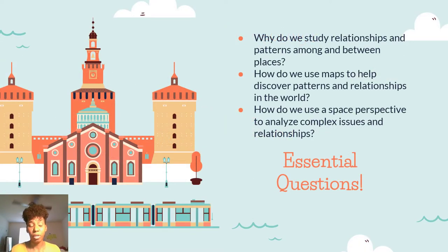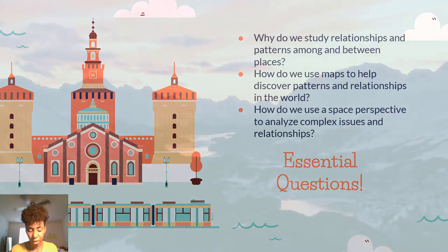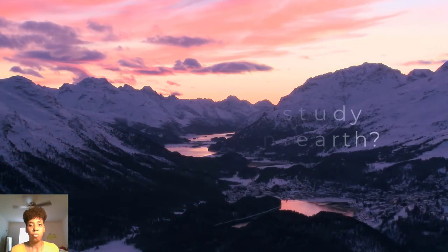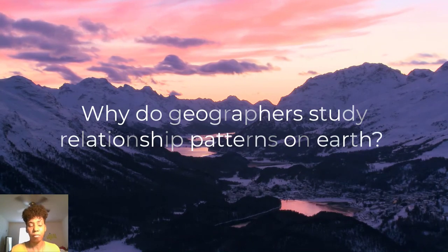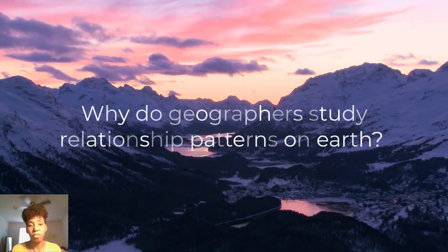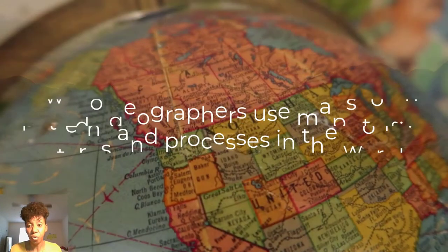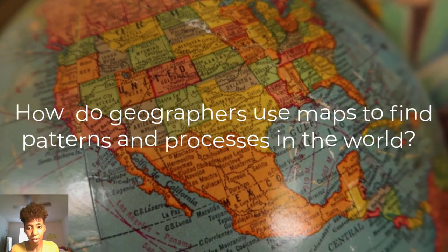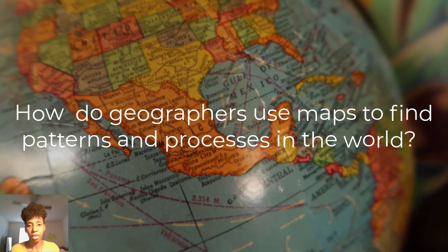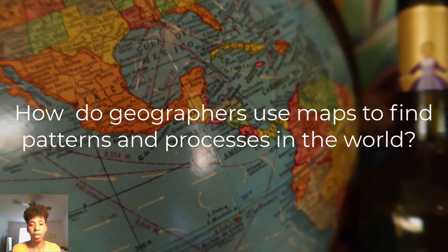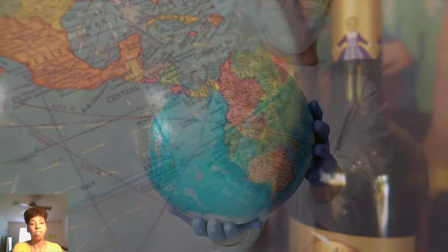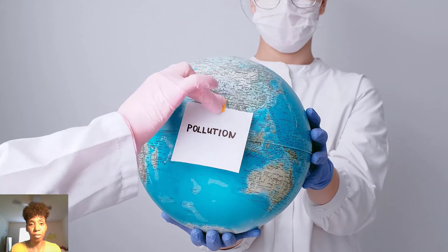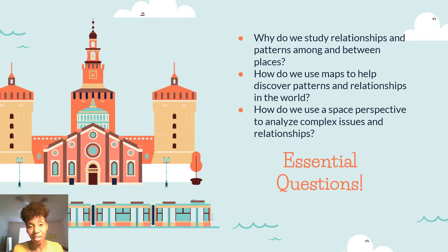The essential questions are always questions that we ask ourselves when it comes to each unit. In this unit, we're basically asking: why do we study these patterns and relationships as they relate to places on the earth? Why is it so important? How are we going to be able to use maps to help us discover these patterns? And how can we use that information to help us solve complex problems that happen in our world?